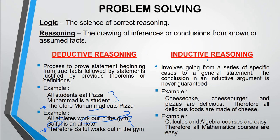And however. For inductive reasoning. Involved going from a series of specific cases to a general statement. The conclusion in an inductive argument is never guaranteed. For example. Cheesecake, cheeseburger, and pizza are delicious. Therefore all delicious food are made of cheese. Which is not never guaranteed. Another example. Calculus and algebra courses are easy. Therefore all mathematics courses are easy. It's not guaranteed right. Not all yeah.